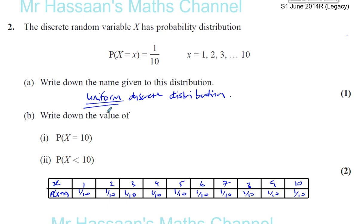So if it says write down the value that P(X=10), well that's 1 tenth. And the probability that X is less than 10, it's everything apart from 10, so it's going to be 9 tenths. Simple as that. There's like three simple, easy marks there.